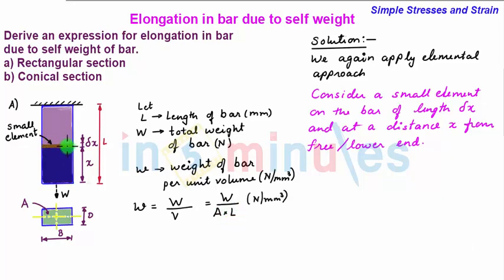Now we see that this small element has been subjected to the weight which is only this much part of the bar which is below this small element. So the elongation of this small element is given as the load which is weight which is equal to weight per unit volume multiplied by volume of this bar below this small element which is A into x.